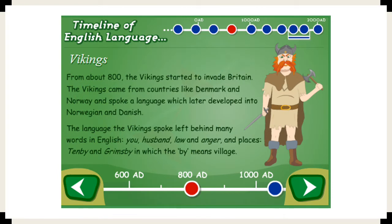From about 800 AD, the Vikings started to invade Britain. They spoke a language that later developed into Norwegian and Danish, and while they were in England they left behind many words that we still use today — for example, 'you' (which fascinates me — what did we use before that?), 'husband', 'law' and 'anger'. Place names were also influenced by the Vikings: Tenby and Grimsby — the 'by' part means 'village'. Your next question is: can you think of any local place names in Norfolk that end in 'by'? Write them down — guaranteed, they will have been named as a result of the Viking invasion.